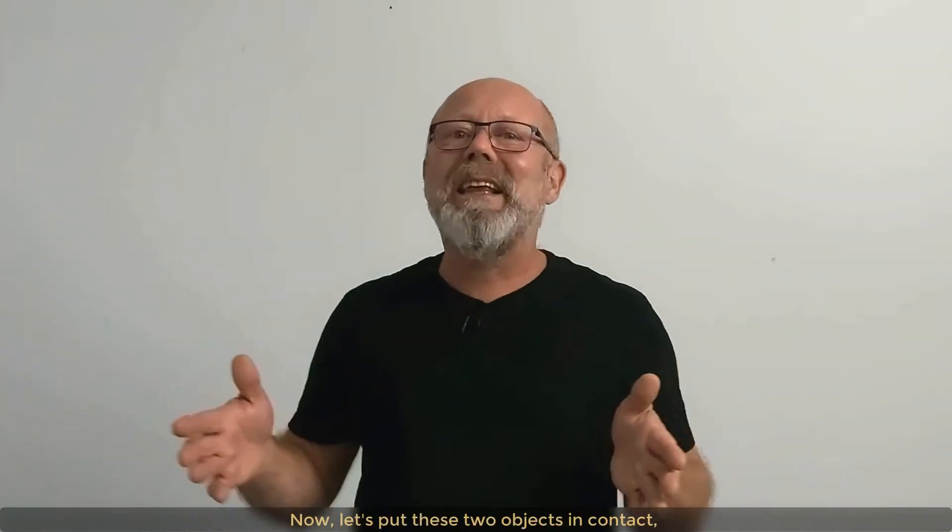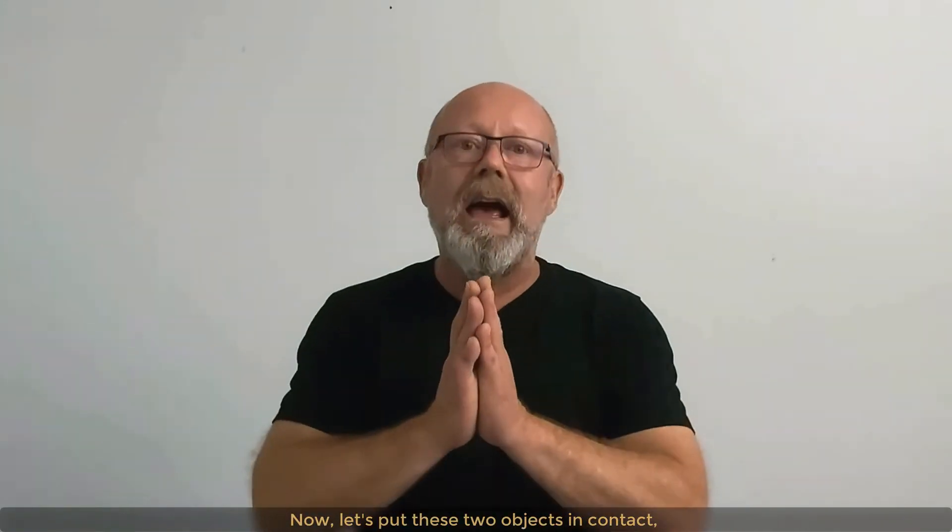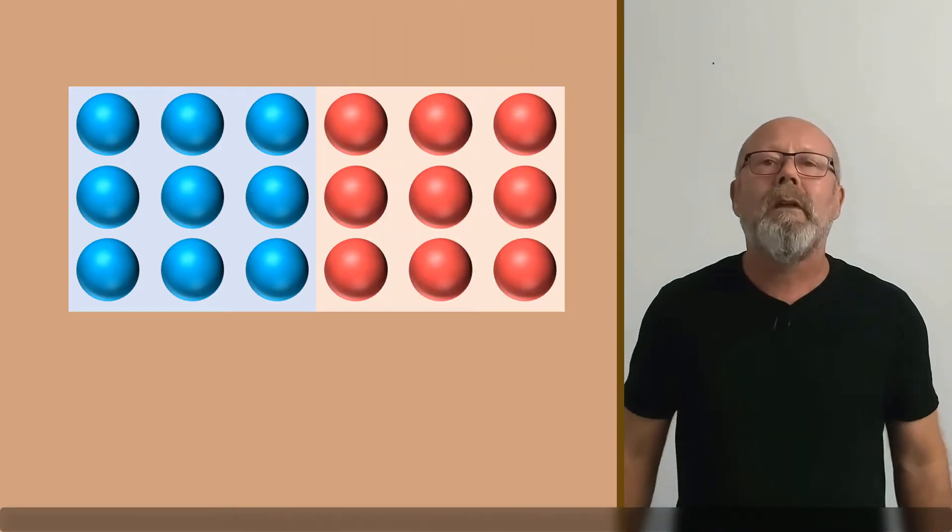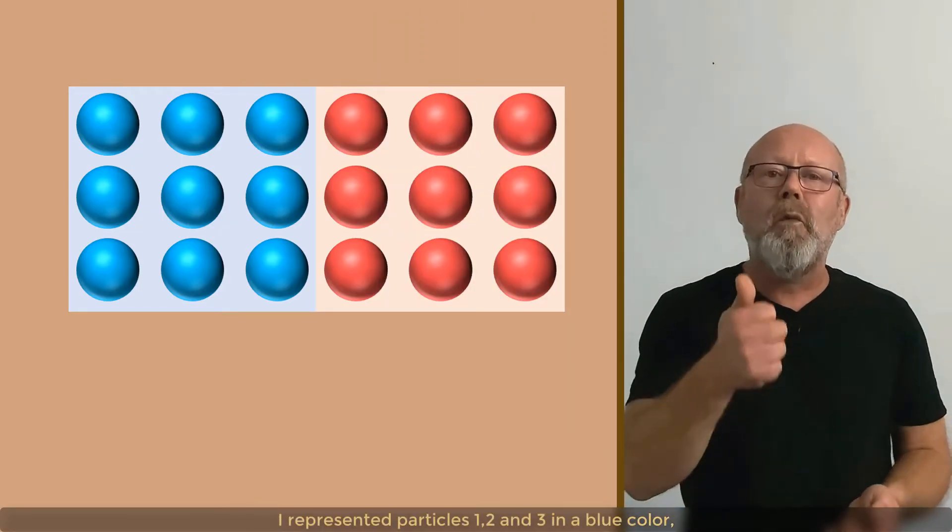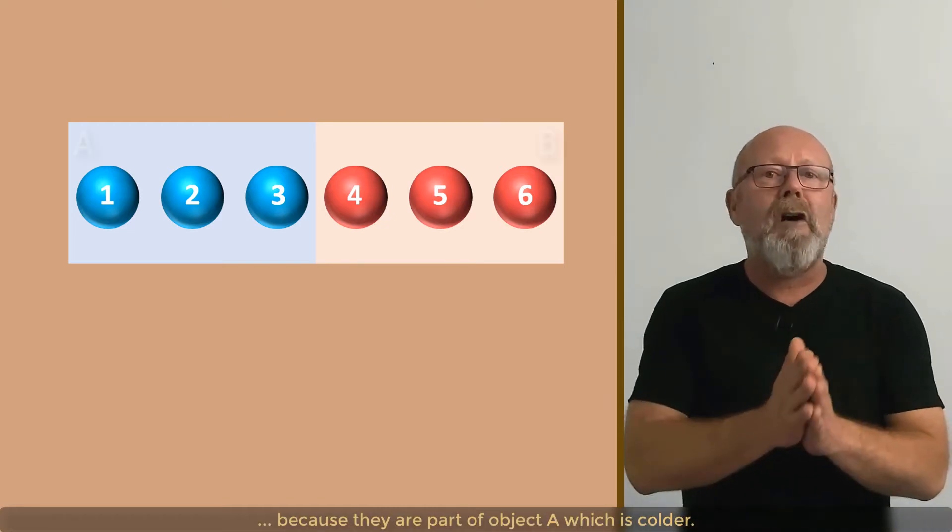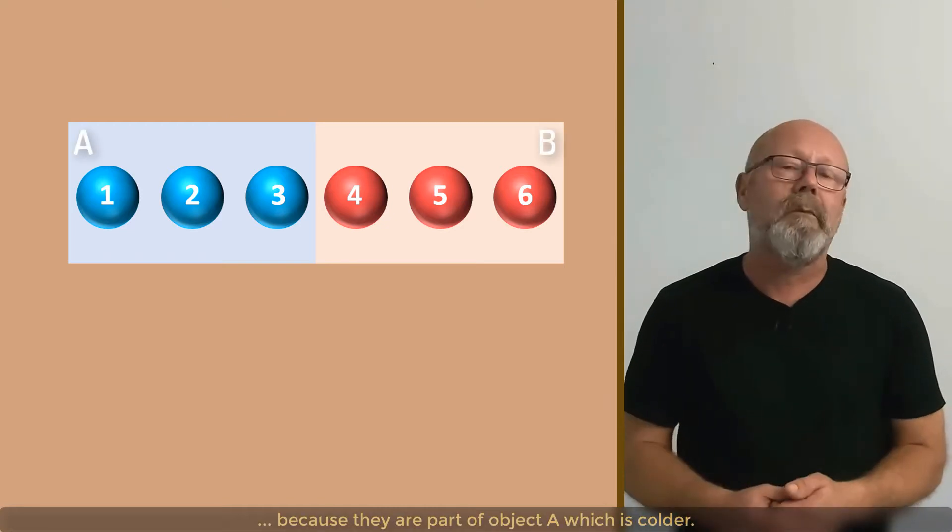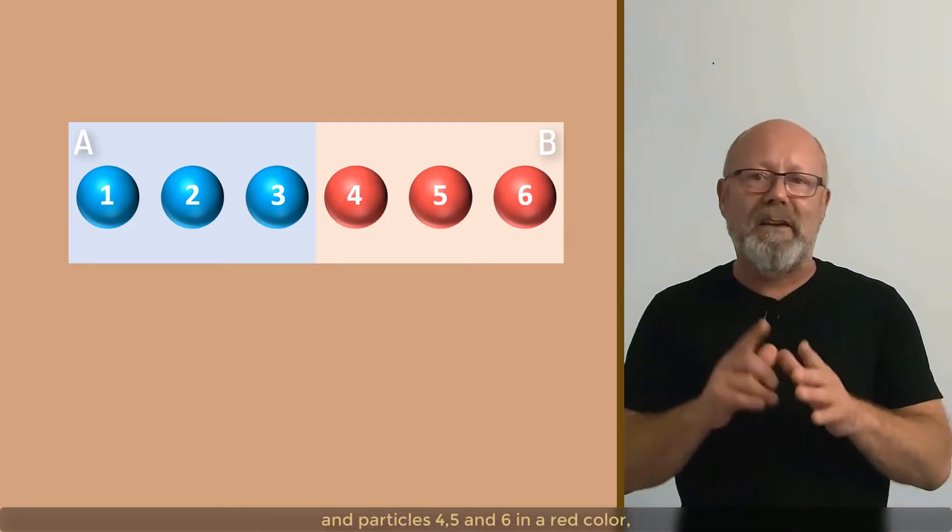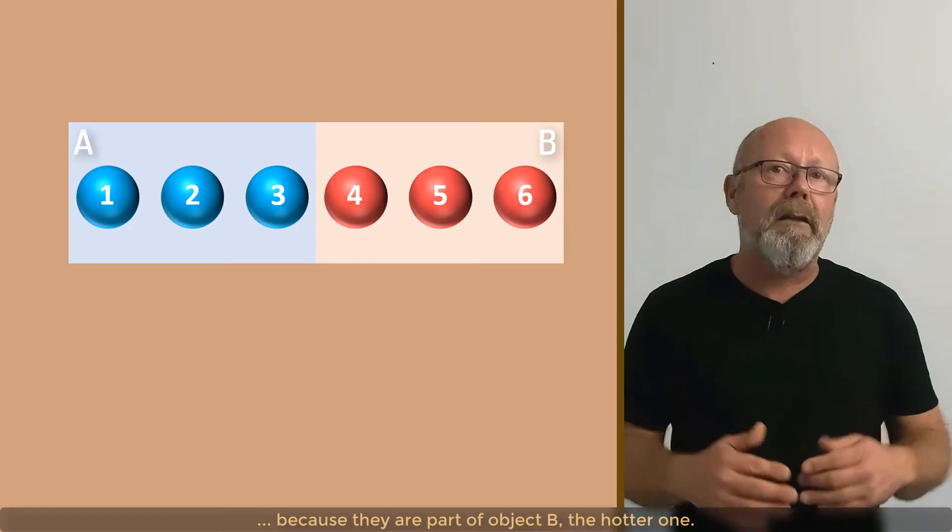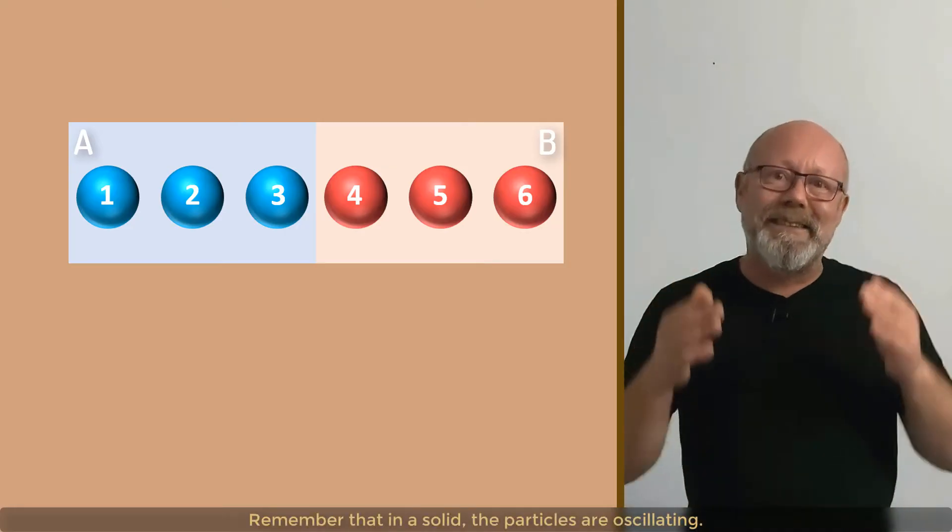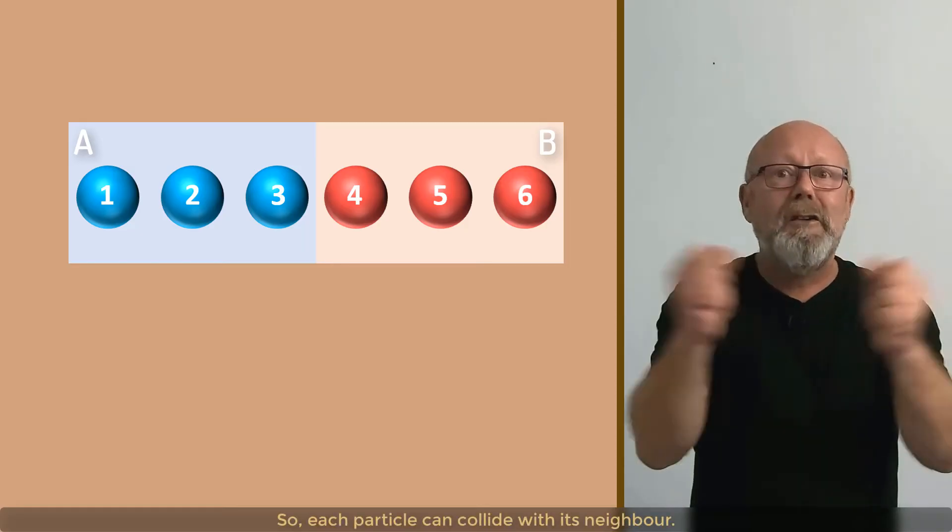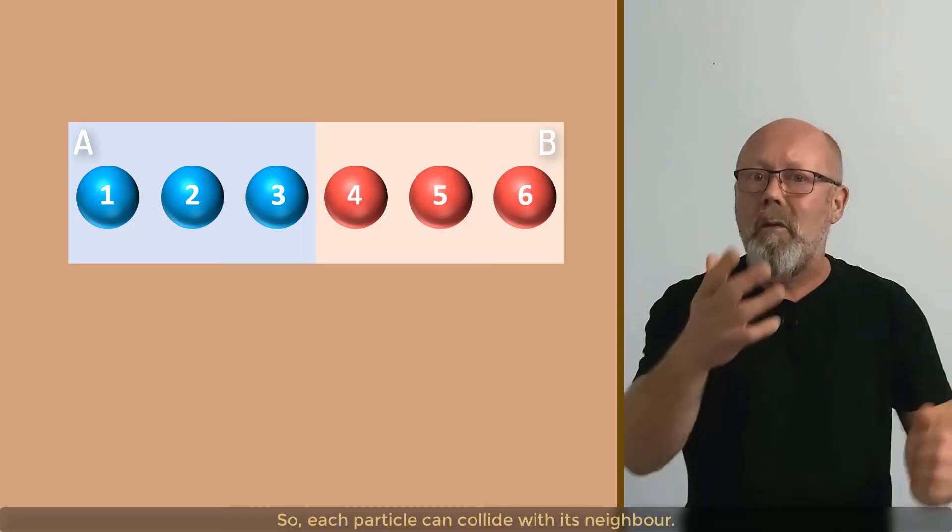Now, let's put these two objects in contact, and look at what happens at the interface between them. I represented particles 1, 2, and 3 in a blue color, because they are part of object A, which is colder, and particles 4, 5, and 6 in red, because they are part of object B, the hotter one. Remember that in a solid, the particles are oscillating. So, each particle can collide with its neighbor.